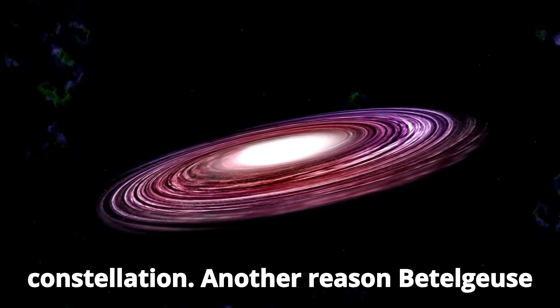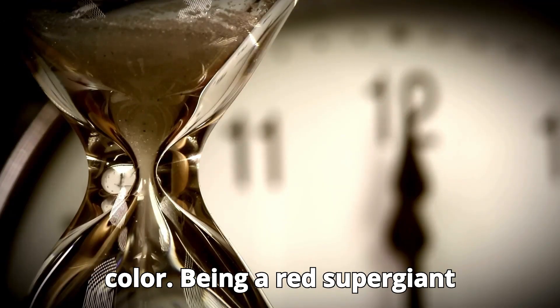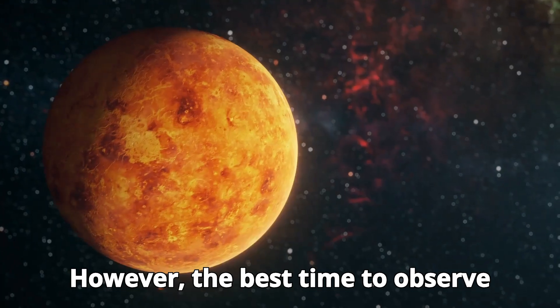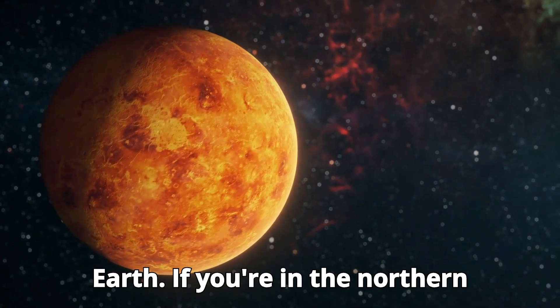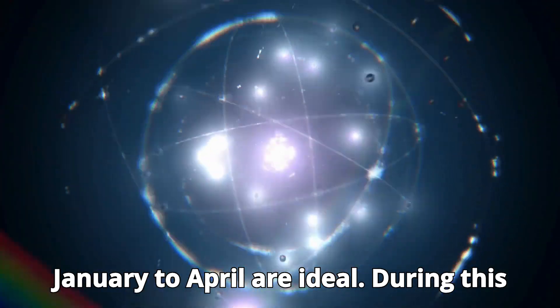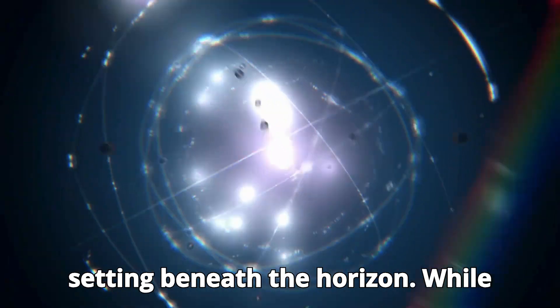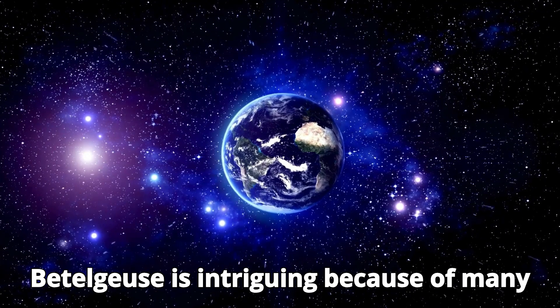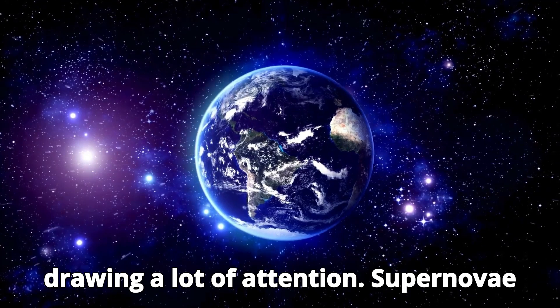Another reason Betelgeuse stands out is its distinct radiant red color. Being a red supergiant star, it's easily visible. However, the best time to observe Betelgeuse depends on your location on Earth. If you're in the Northern Hemisphere, the cold weather months from January to April are ideal. During this period, the star rises as the sun is setting beneath the horizon. While Betelgeuse is intriguing because of many factors, its inevitable destiny has been drawing a lot of attention.